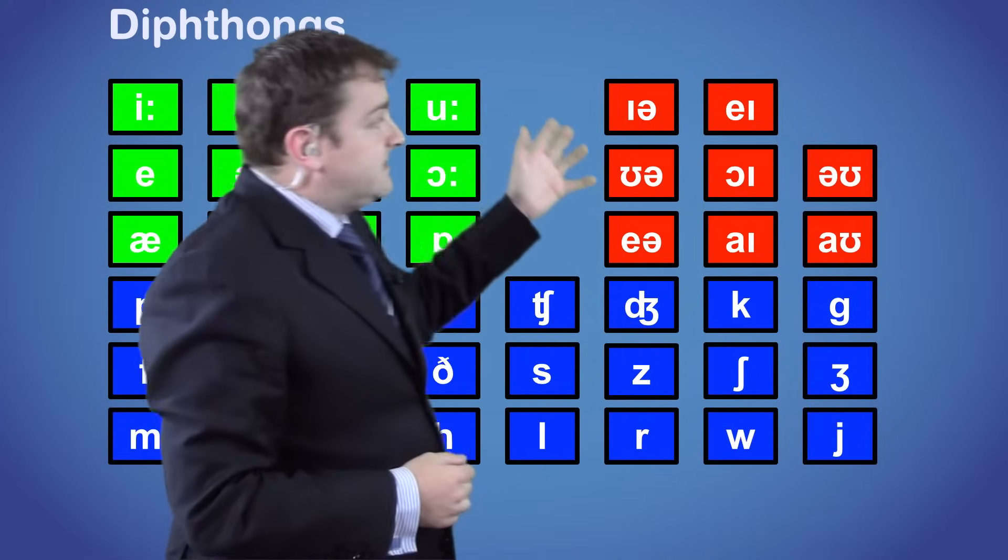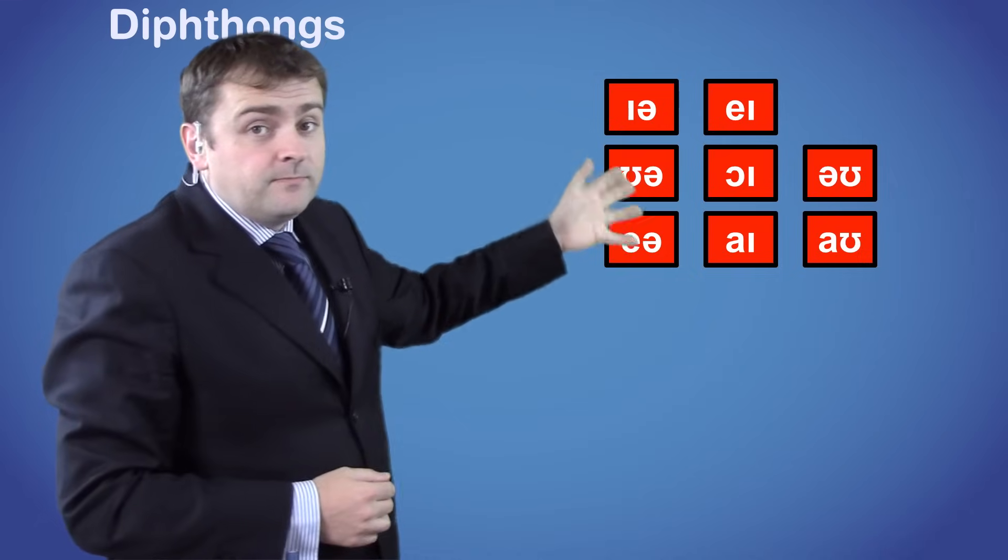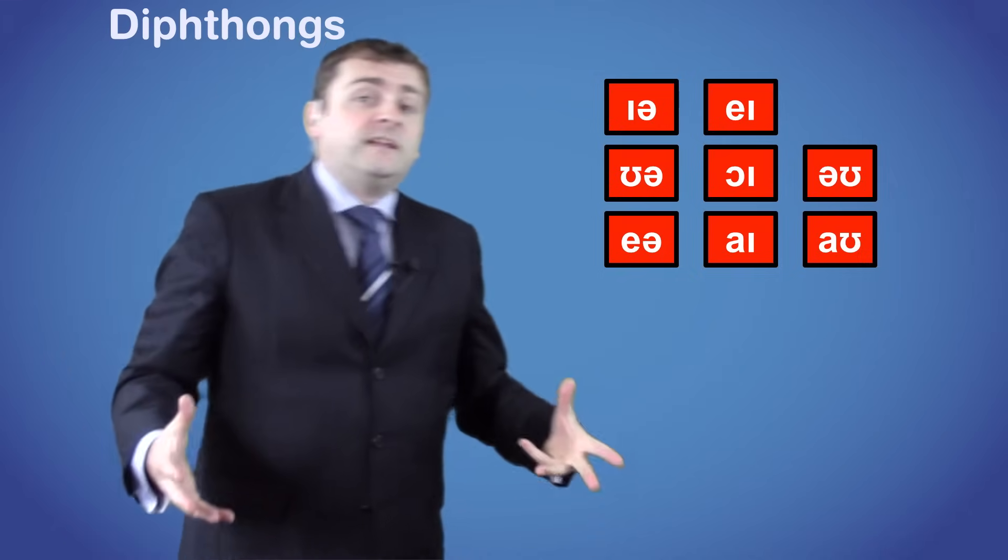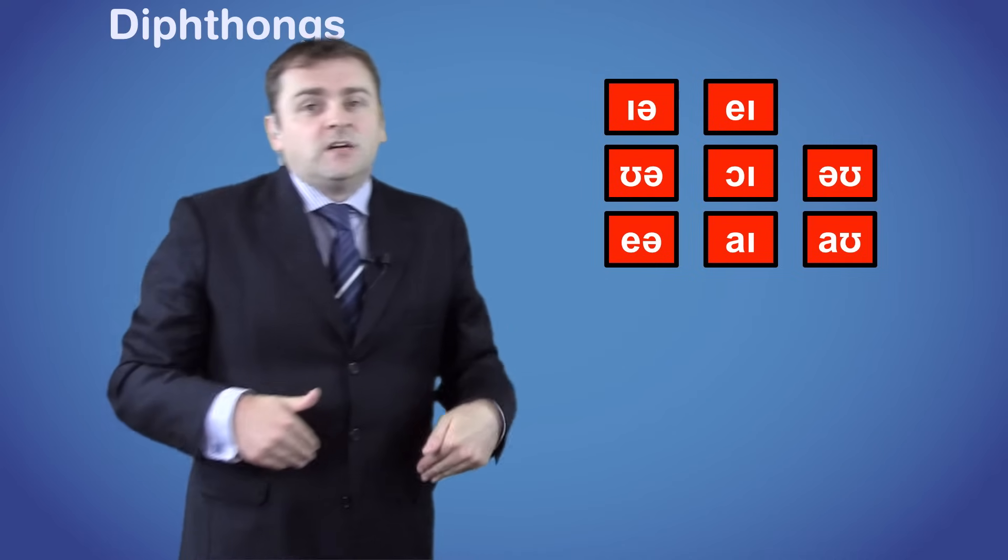Diphthongs are the sounds represented by the symbols in red. There are 8 of them on the phonetic chart and these are the main ones you need to know about.